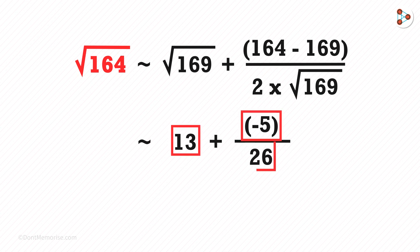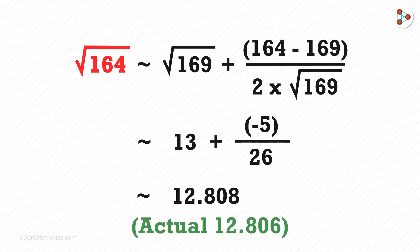So 13 minus 5 over 26. We get the answer as 12.808. And if we calculate it using a calculator, then the actual answer we get is 12.806, which is quite close to this answer.